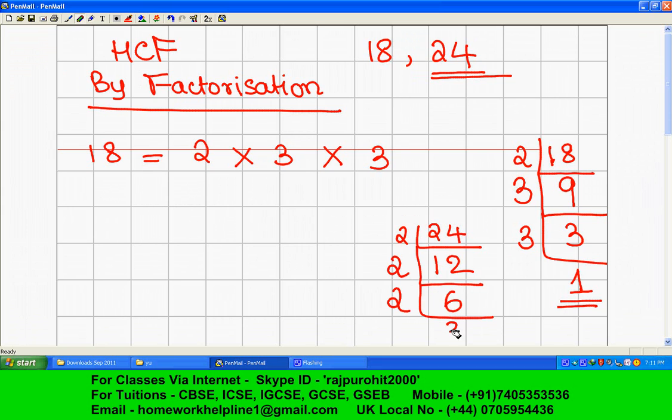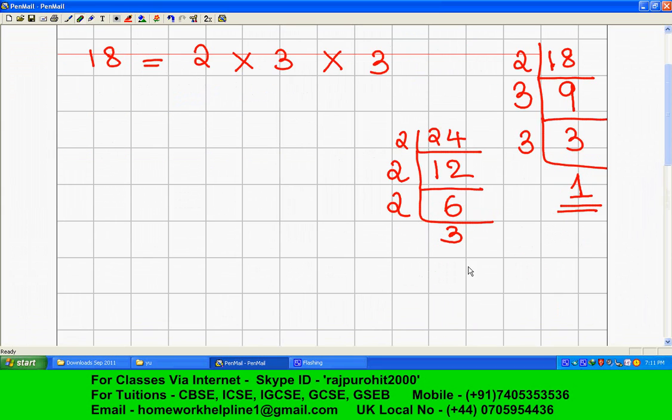Again it is divisible by 2. Two threes are 6. Now it is divisible by 3. Three ones are 3.